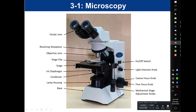This black platform is referred to as the stage, and this is where we put the slide — in the stage clips. Underneath the stage is what's called the condenser, and its job is to gather and focus the light up and into the specimen.